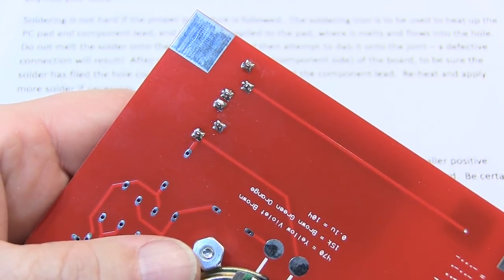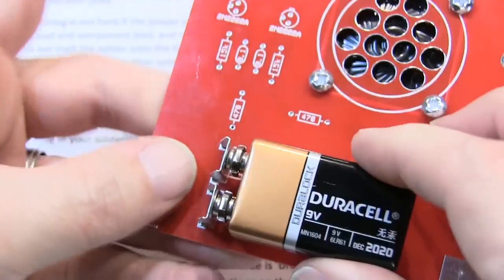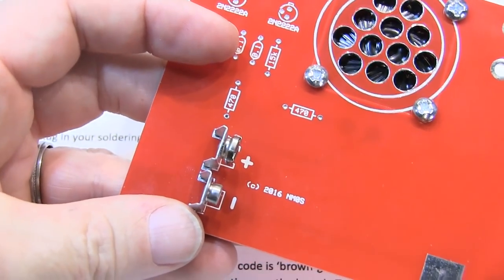Once you're finished soldering the 9-volt battery clip joints, you can turn the board over and pull the 9-volt battery off for now and set it aside.